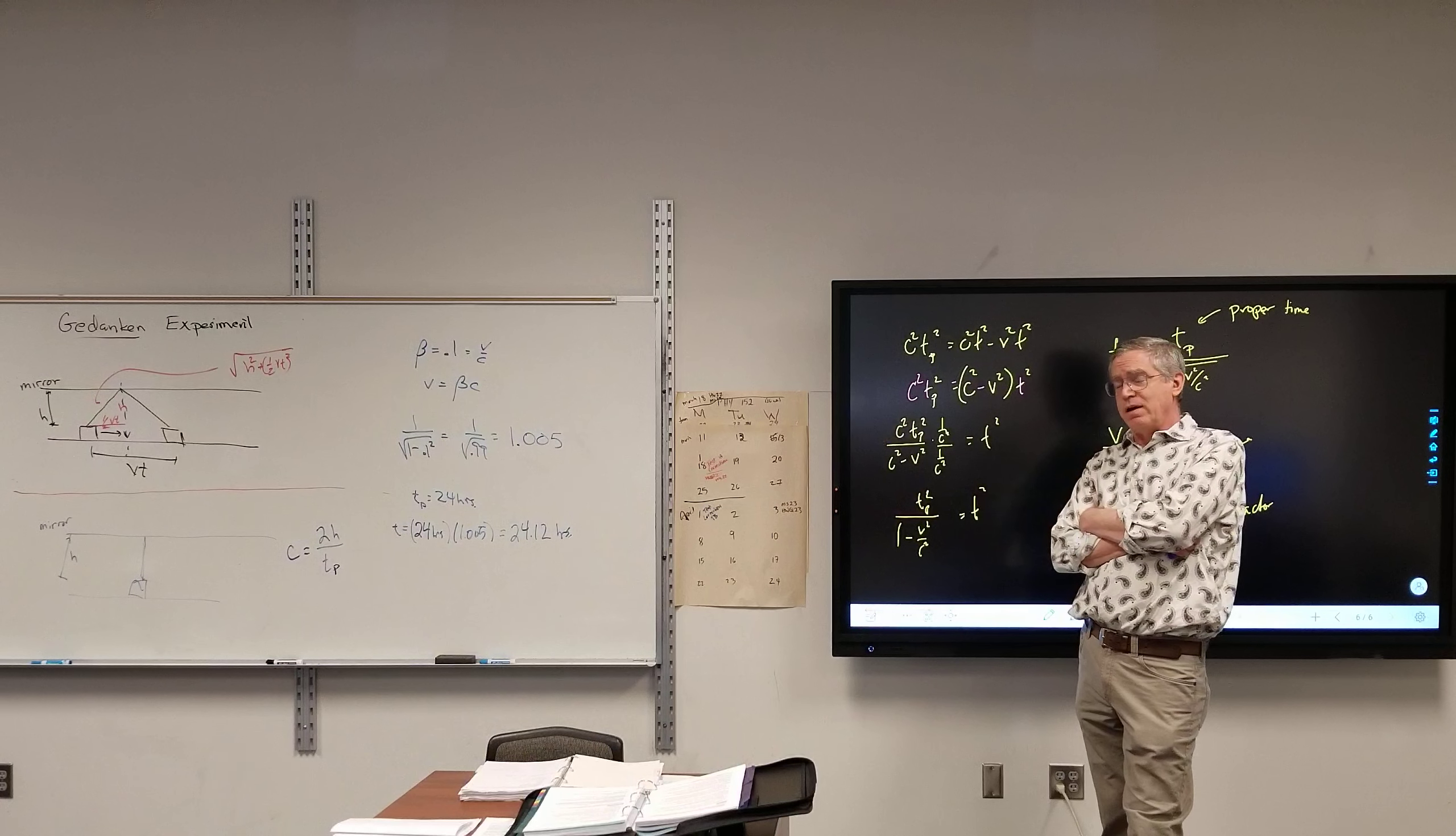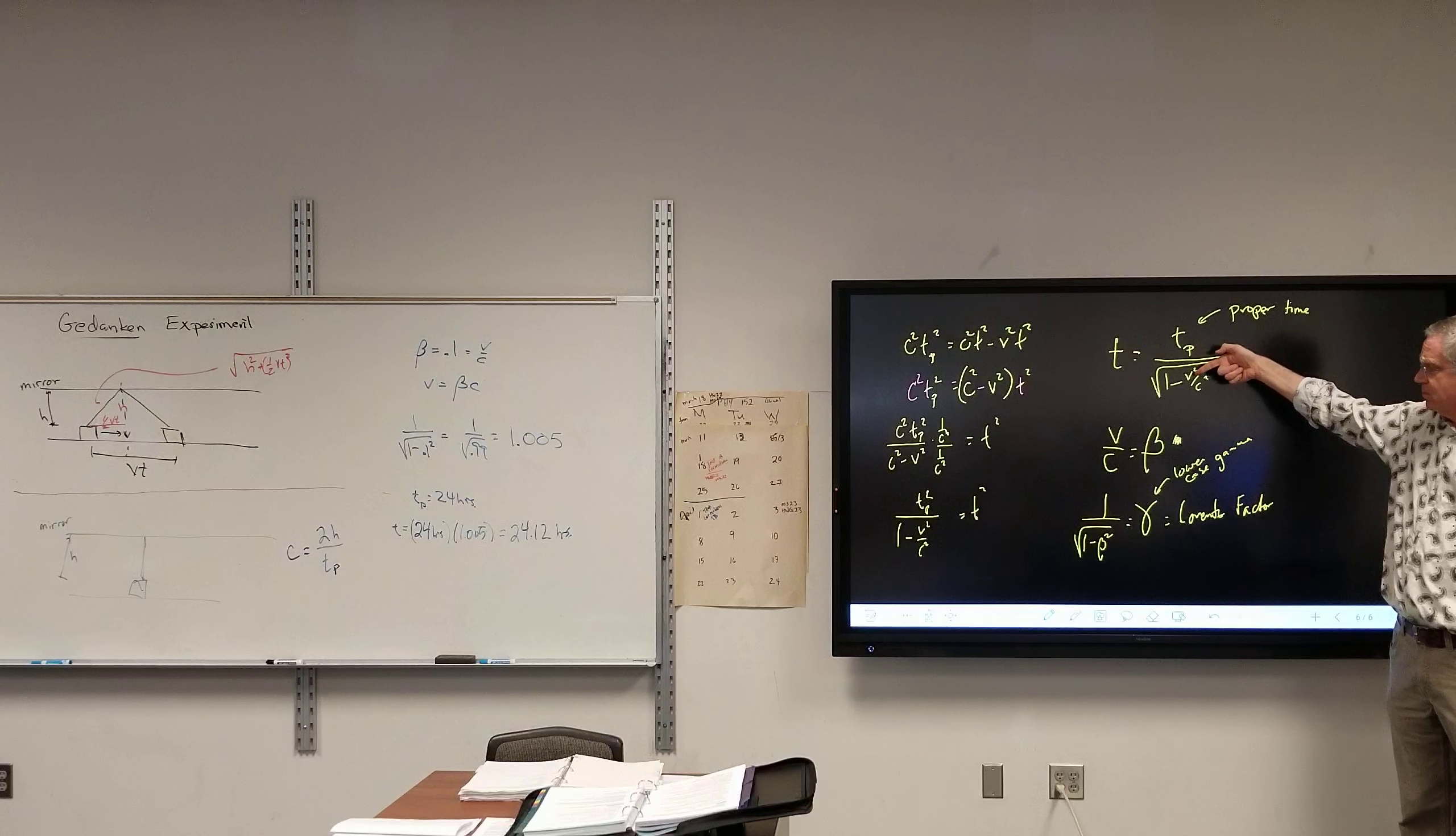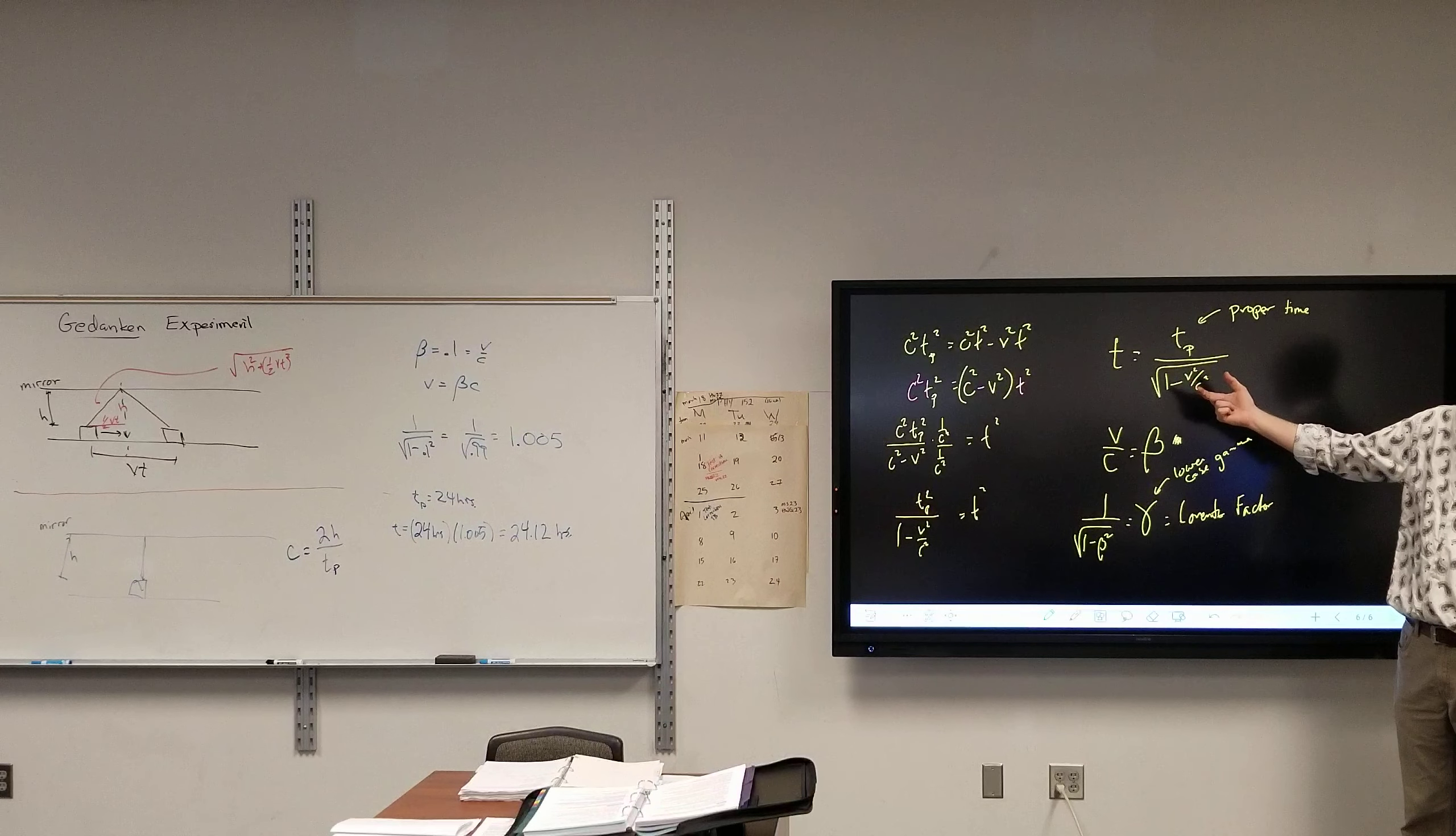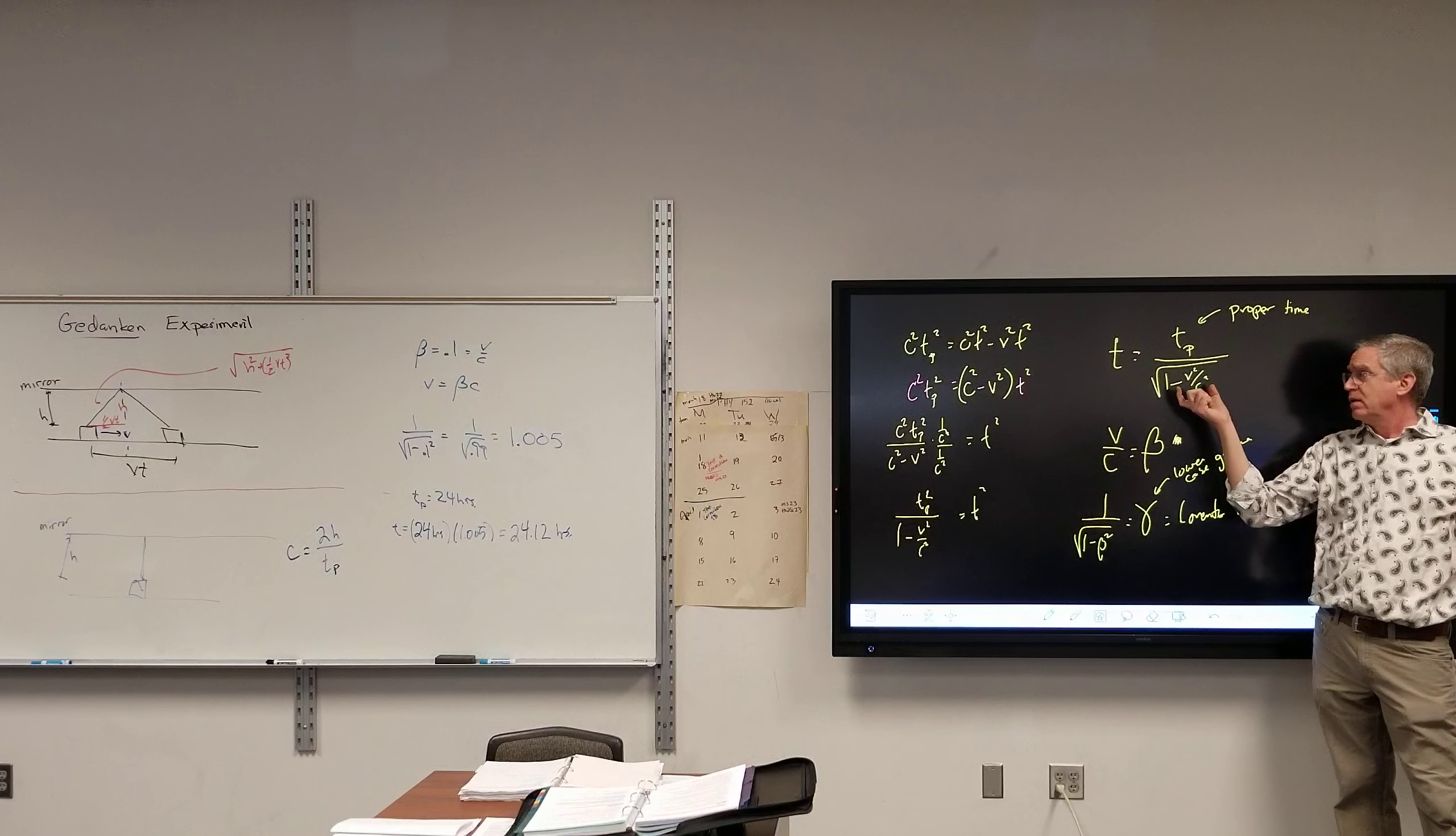But there is a theoretical particle called the tachyon, which travels faster than the speed of light. Because ultimately, if B equals C, then I get zero in the denominator, and the math people hate that. So, the math is dictating that no object with mass can go to the speed of light.